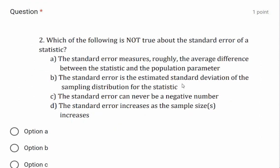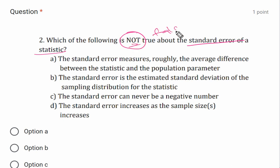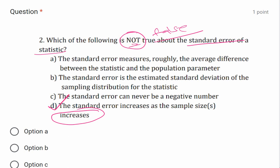Question: Which of the following is NOT true about the standard error of a statistic? The standard error is roughly the average difference between the statistic and the population — this is correct. The standard error is the estimated standard deviation of the sampling distribution — this is correct. The standard error can never be a negative number — correct. The standard error increases as the sample size increases — this is FALSE. Option D is the correct answer.